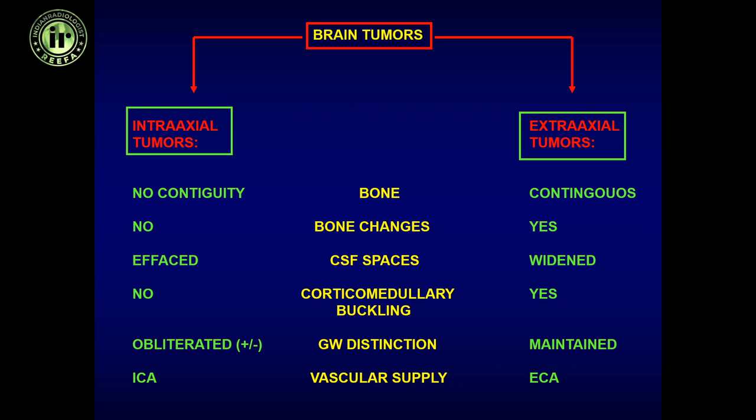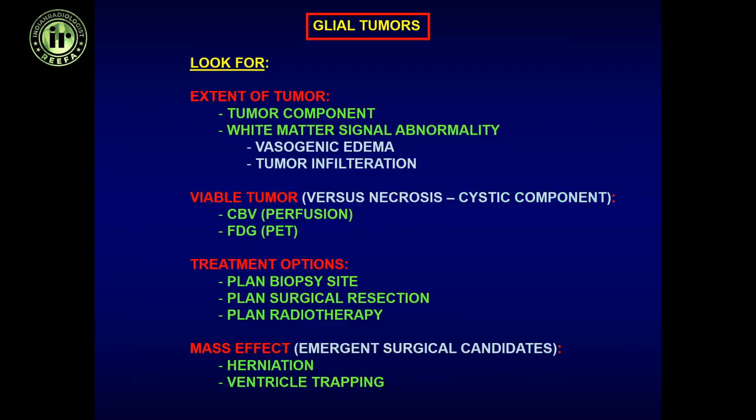Once we see a tumor, the first thing is to determine its location — intra-axial or extra-axial. All intra-axial tumors have no continuity with bone and very rarely any bone changes. They cause effacement of CSF spaces; there is no corticomedullary buckling, which is seen in extra-axial tumors like meningioma where a CSF cleft is present. Gray-white distinction is obliterated in intra-axial tumors, and vascular supply is generally from the internal carotid artery.